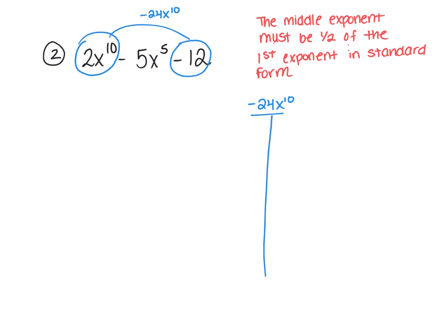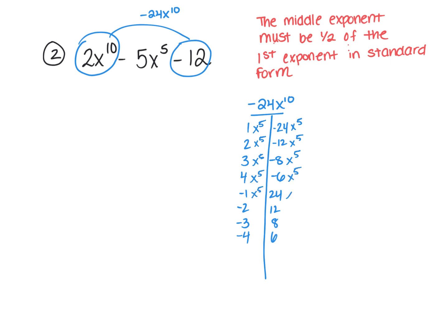So we want to find the factors of negative 24. We can actually use the same chart as before — pause the video and copy down that same chart. This is what it should look like. We also have to keep in mind that we're multiplying to x to the tenth this time, so we need an x to the fifth and an x to the fifth in each factor, because x to the fifth times x to the fifth is x to the tenth — we keep the base and add the powers. Of this list, we're looking for pairs that add to the middle term of negative 5x to the fifth. If you're not sure, put the numbers in the calculator and check. Pause and hit resume when you're ready for the answer.